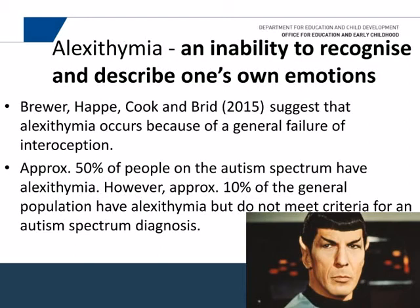Alexithymia is really strongly linked to interoception. Alexithymia is an inability to recognise and describe your own emotions. There's been a lot of research suggesting people have alexithymia because of a lack of interoception. We know that people without interoception often have alexithymia, but if we can teach them interoception, hopefully that will decrease. Spock is a very good example of alexithymia. About 50% of kids and adults on the spectrum have alexithymia, compared to about 10% of the general population.